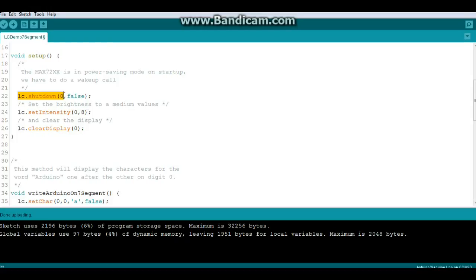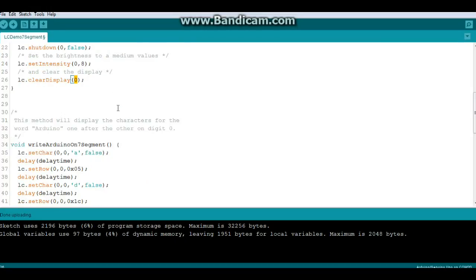This is our address for the MAX7219. Since we're only using one, it's always going to be zero, and false so it is not shut off. Then we're going to set the intensity: LC.setIntensity, chip address zero, 8 medium value. Next we'll clear the display: LC.clearDisplay, display zero.